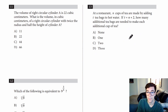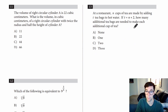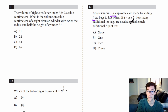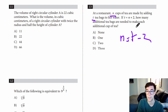Number thirteen: at a restaurant, N cups of tea are made by adding T teabags to hot water. If T equals N plus 2, how many additional teabags are needed to make each additional cup of tea? Tea bags are T and cups are N. Rewriting: N equals T minus 2. The slope is just 1 because it's one tea per cup, so our answer is B, one.